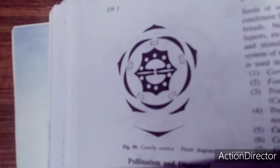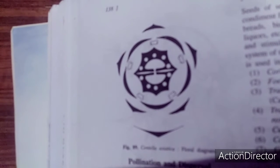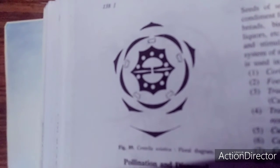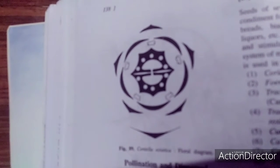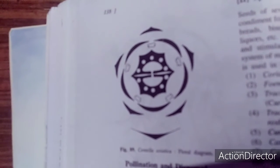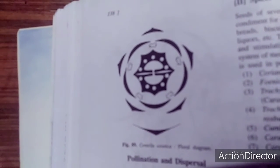Stamens are five. Ovary is bilocular with inferior ovary. Swollen nodes are also recognized. The fruit is schizocarpic—cremocarp is present. Herbaceous plants with aromatic smell.